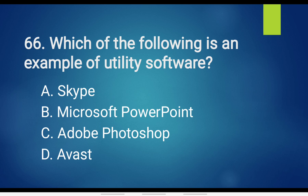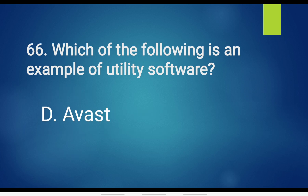Question No. 66. Which of the following is an example of Utility Software? Option A. Skype. Option B. Microsoft PowerPoint. Option C. Adobe Photoshop. Option D. Avast. The answer is Option D. Avast.